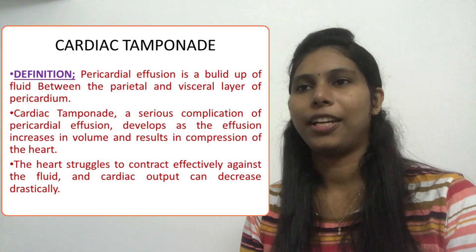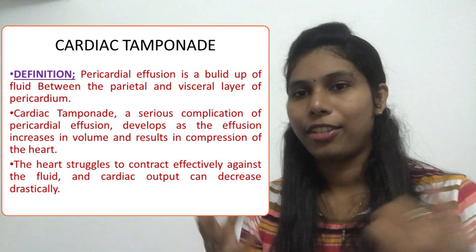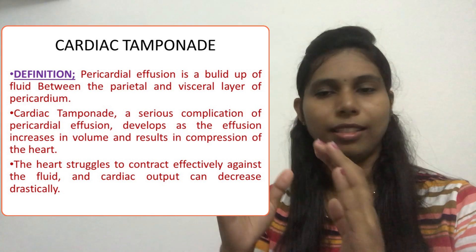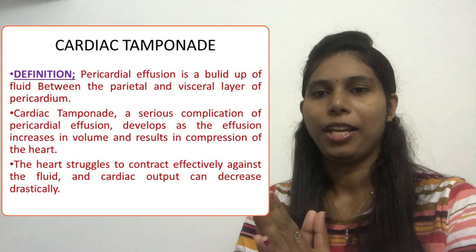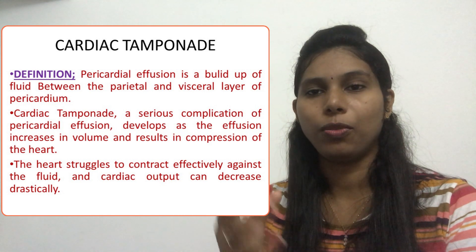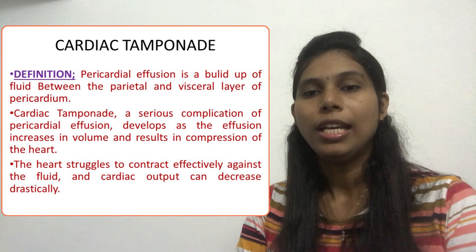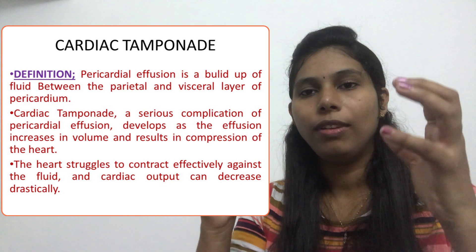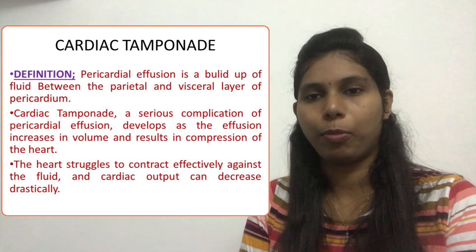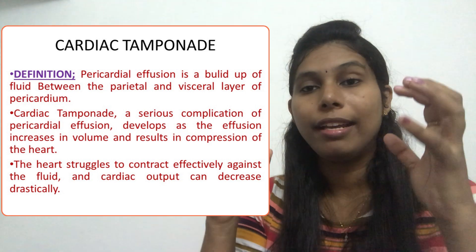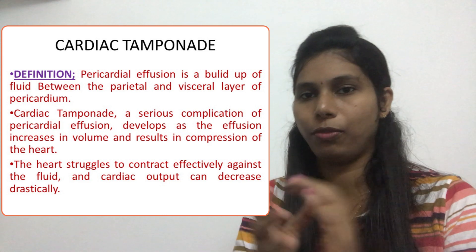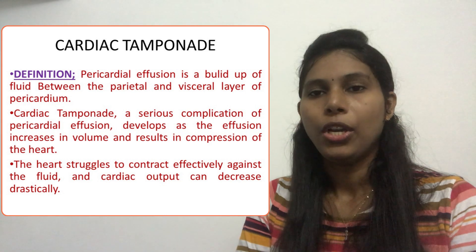Let us start. What do you mean by cardiac tamponade? When we hear this term, we know it is related to the cardiac system, but we might have a little confusion about what it means. Cardiac tamponade will usually develop from some other cardiac problems, especially pericardial effusion. We know that the pericardium is the protective layer of the heart.